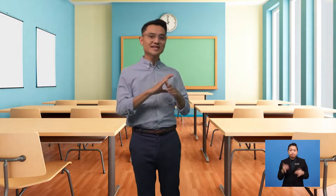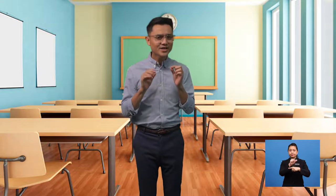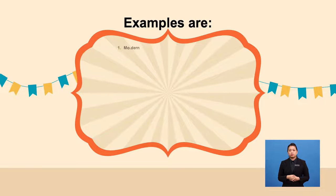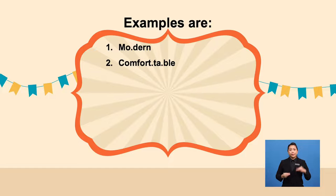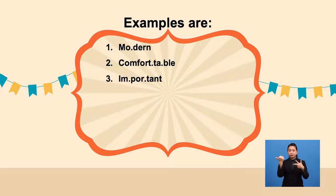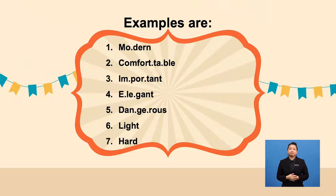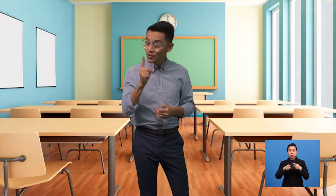Let's do this exercise. Can you form comparative adjectives from these words? Word number one: modern. Two: comfortable. Three: important. Four: elegant. Five: dangerous. Six: light. Seven: hard. Now check your answers with your friends — don't forget to use the rule that we have just learned.